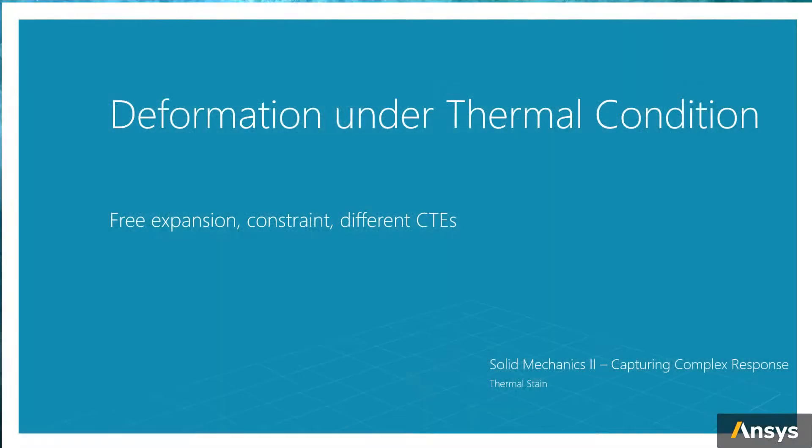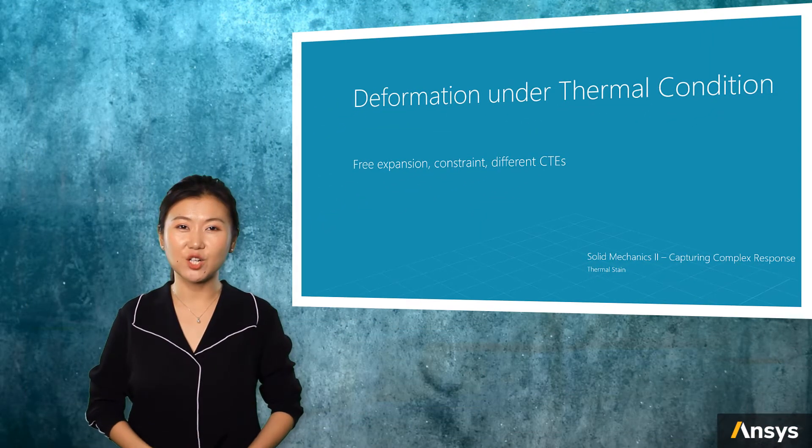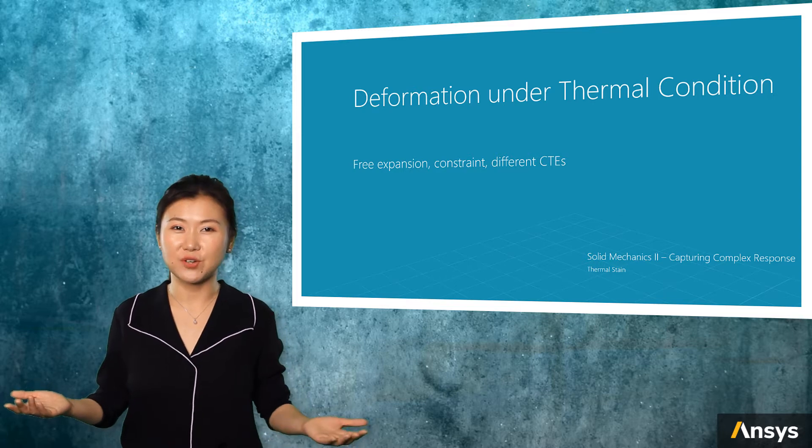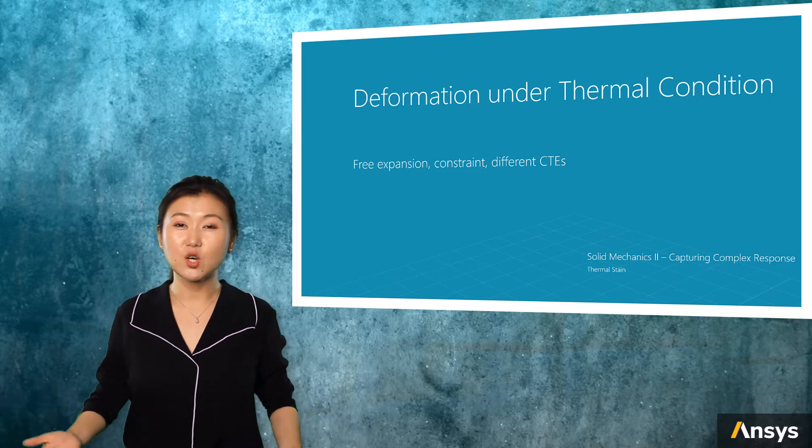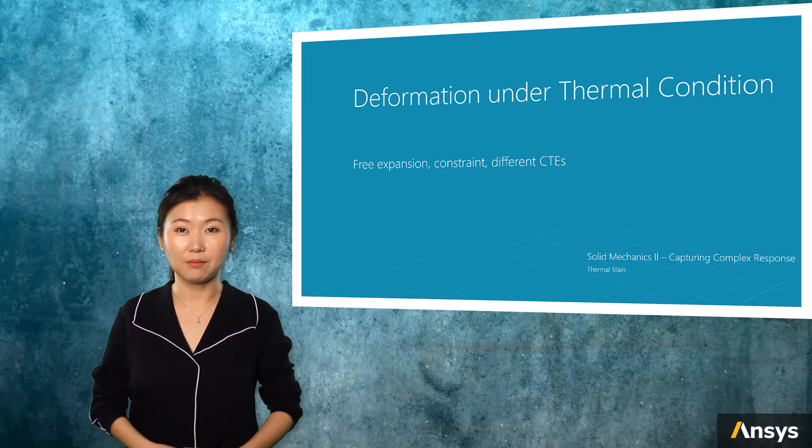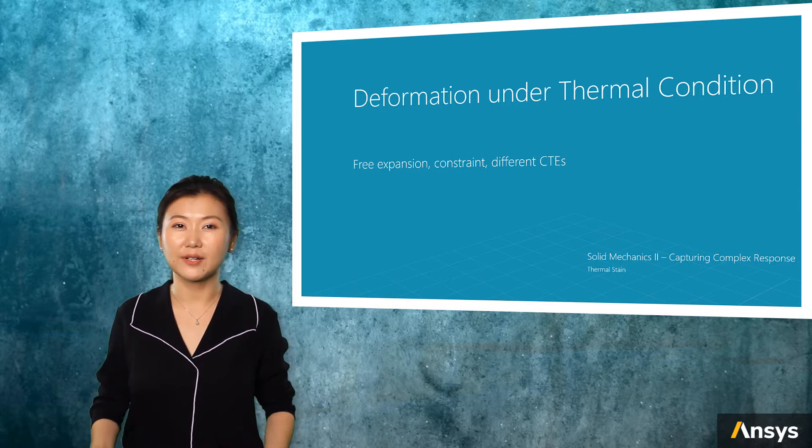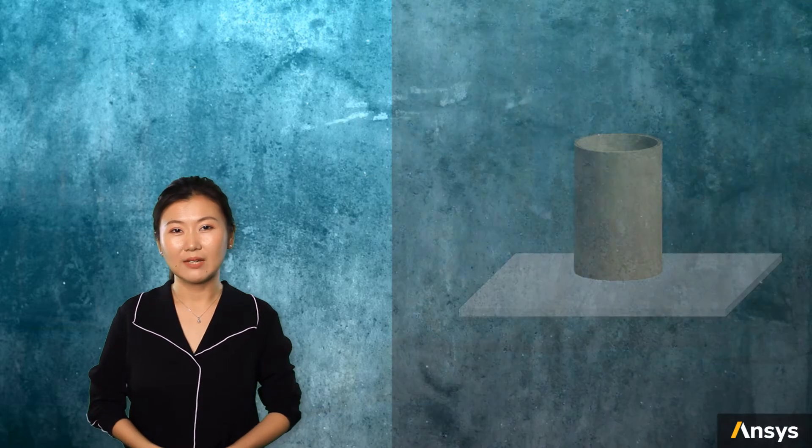We mentioned that in general, the total strain of an elastic problem is the combination of elastic strain and thermal strain. If there's no thermal condition for a mechanical problem, naturally the thermal strain part can be eliminated. In a case that thermal condition does exist, we'll have thermal strain. But how about the elastic strain part? Is there going to be elastic strain for the problem, and if so, where does it come from?